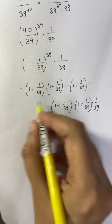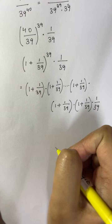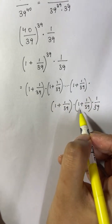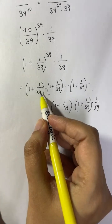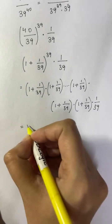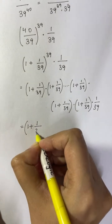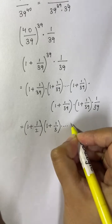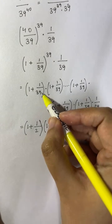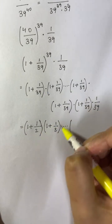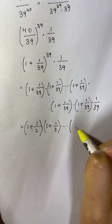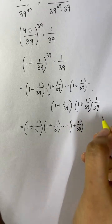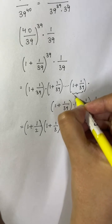Now what can we do? You have split it into these terms. For these kinds of questions, we can change the denominators in each bracket. So how can we write it? Each bracket, we can write the denominator as 2, then 3, and so on. Let's write it as (1 + 1/2) times (1 + 1/3) and so on. The 37th term will be (1 + 1/38).